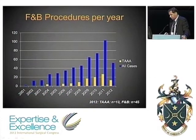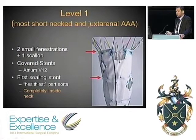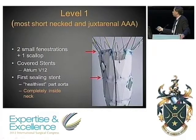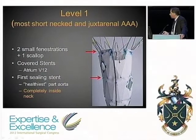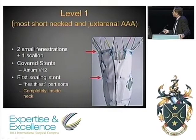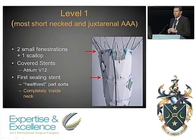The first level we attempted was the standard fenestrated graft: two fenestrations for the renal arteries and usually a scallop for the superior mesenteric artery. We now use covered stents to fix these fenestrations — in the early days we used uncovered stents, but covered stents have better patency and provide a better seal. The key is to customize the graft so that you have a first sealing stent completely inside the neck, effectively converting a short-neck or no-neck situation into a longer neck. The most stable portion of the aorta is that segment between the renal arteries and the celiac trunk.